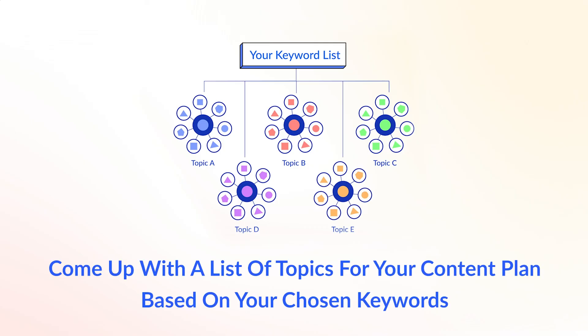Come up with a list of topics for your content plan based on your chosen keywords. Getting a deep understanding of your target audience is an essential part of ranking in Google today. The more you can understand your audience's pain points and needs, the more you can address those issues with solutions. Put simply, the more you know about them, the more topics you can cover. And that is what boosts your topical authority and what makes Google see you as an expert on the subject.